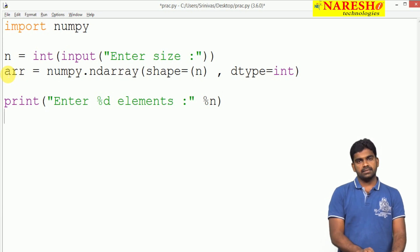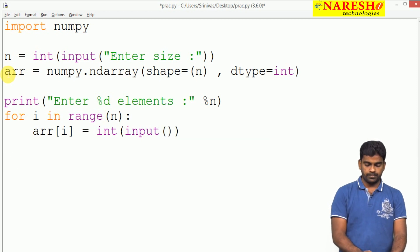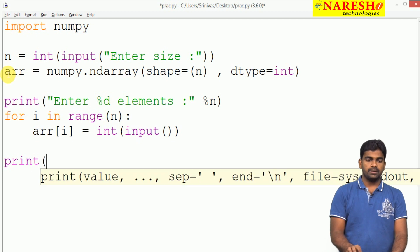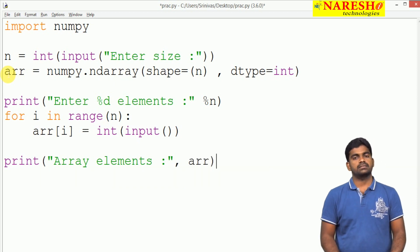We are reading in the same way with a for loop: for i in the range of n. Here it's directly into arr[i] - we read integer of input. Later we are printing the array elements.